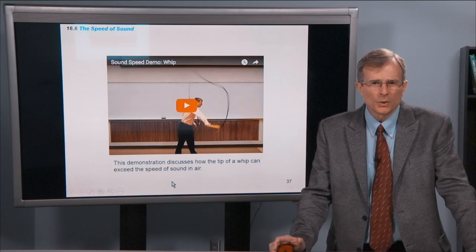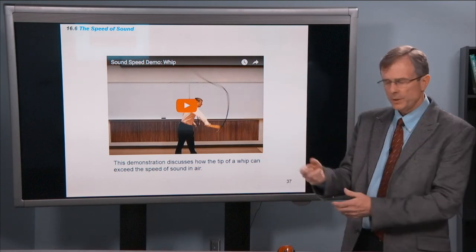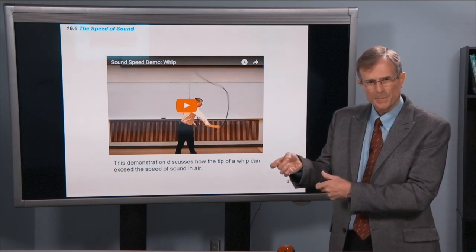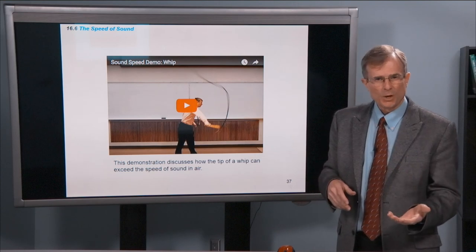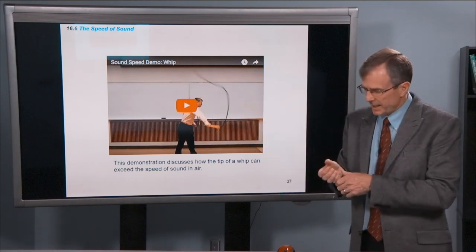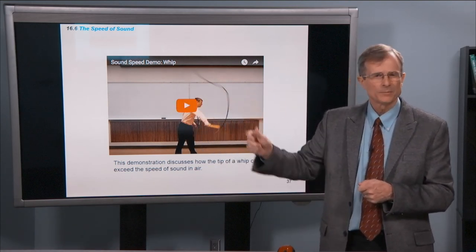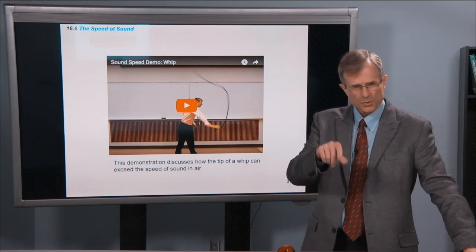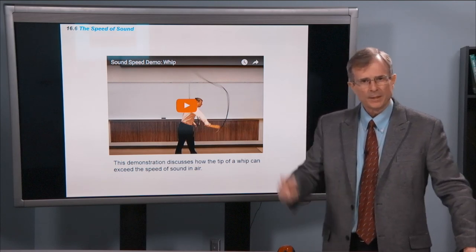This is a demonstration of how you can exceed the sound speed with the tip of a whip. The way that it works is when you crack the whip, this handle here is heavy. The leather near the handle is very thick. It's massive. The mass per unit length is very large. So that means sound speed is small through that. But as you proceed to the end of the tip of the whip, the diameter and the mass per unit length gets smaller and smaller and smaller, until right at the tip you just see a little tiny piece of thin leather at the end of the whip. That mass per unit length is very small.